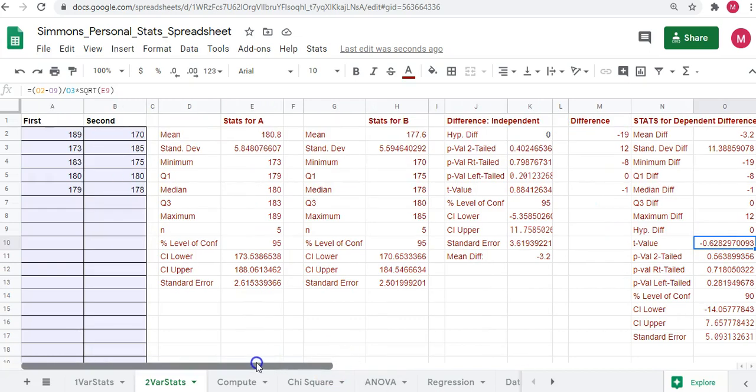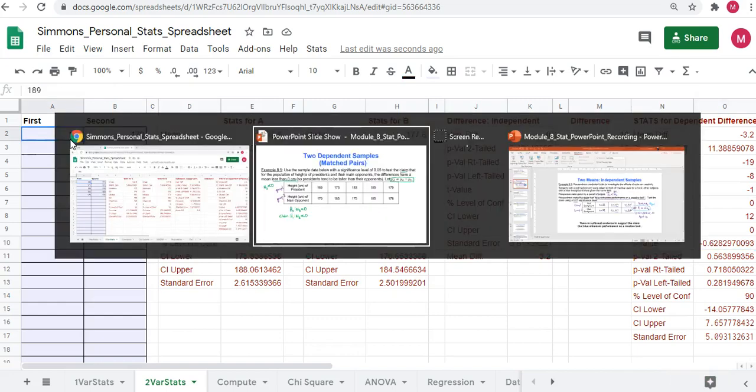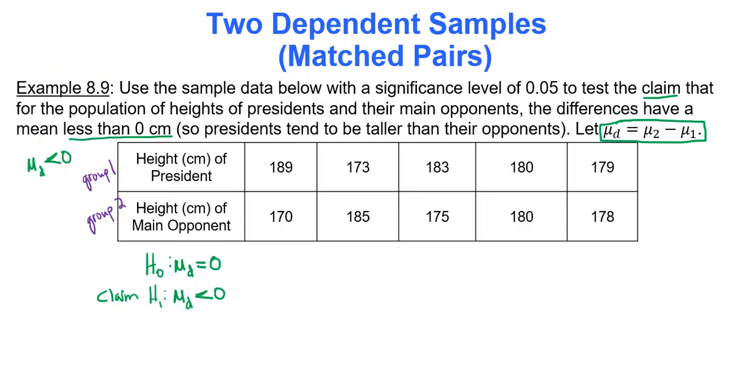Remember, say test statistic 10 times fast, see how it works out for you. Alright, so my test was left-tailed. I probably should have indicated that here. Where our test statistic was equal to negative 0.63.